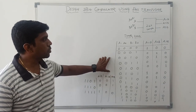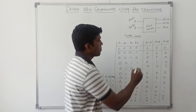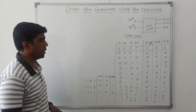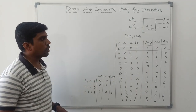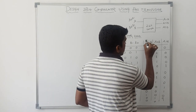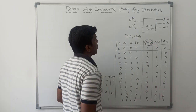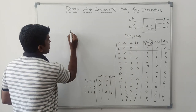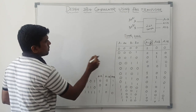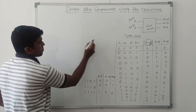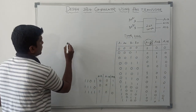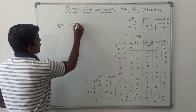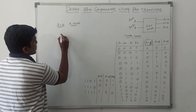After simplifying this truth table, we can find the equation for A equal to B, A less than B, and A greater than B. Today's session I have only focused on A equal to B — how to draw the pass transistor logic for A equal to B. Using KMAP, we can find the expression for A equal to B.